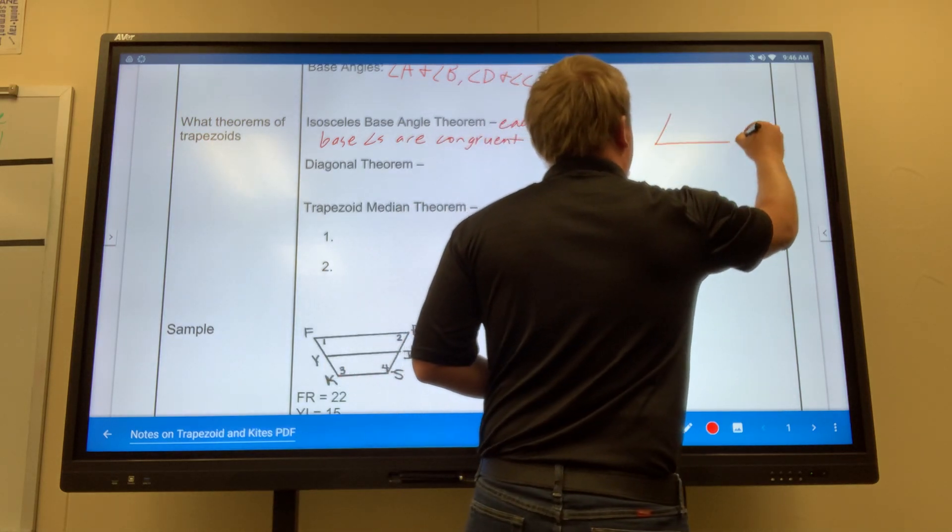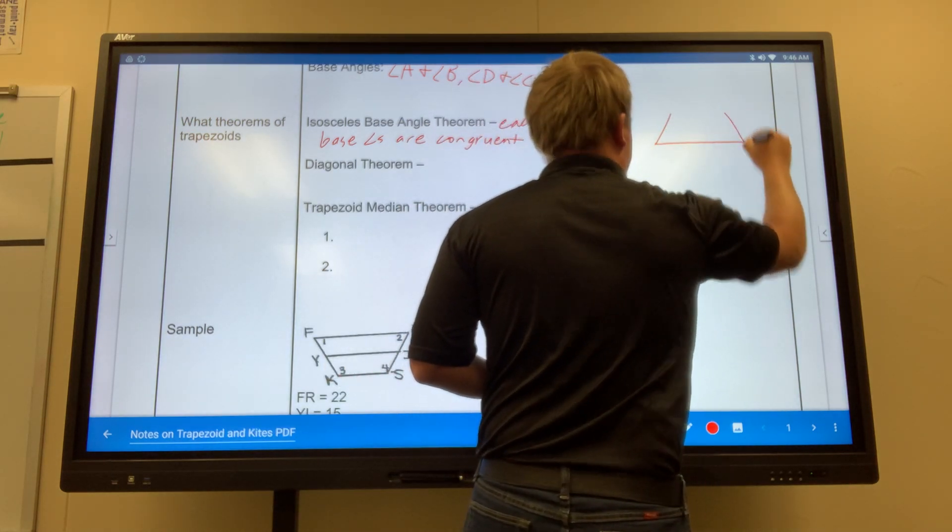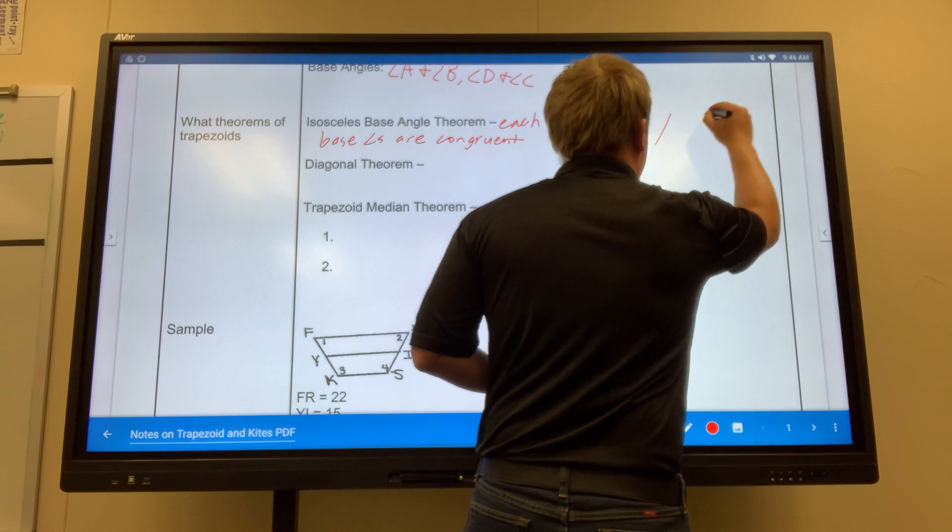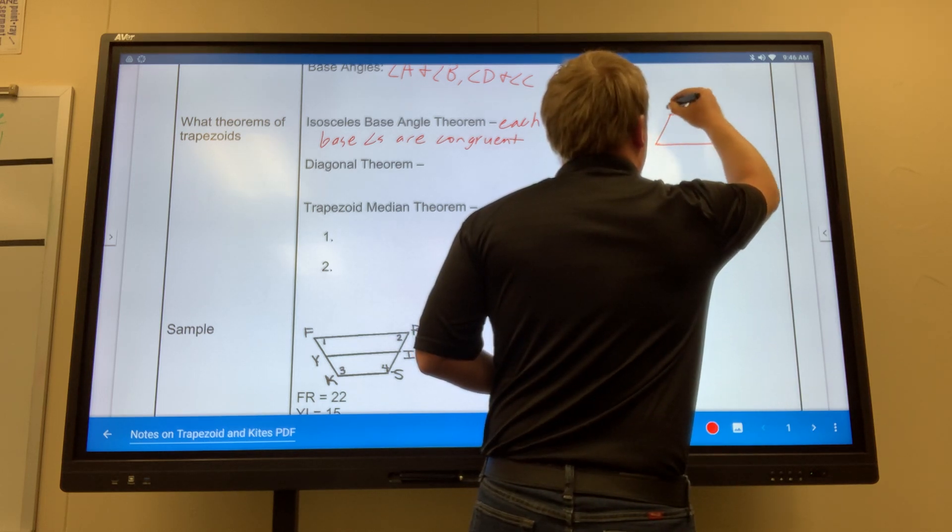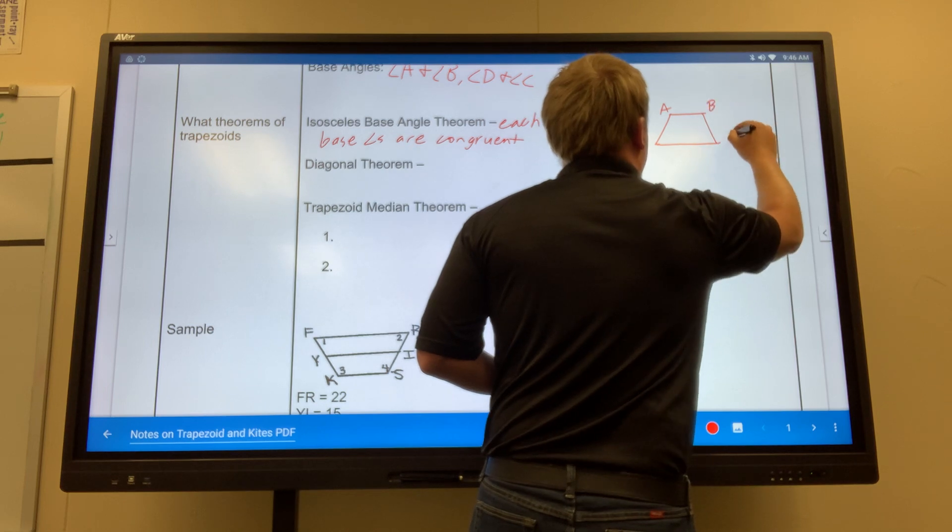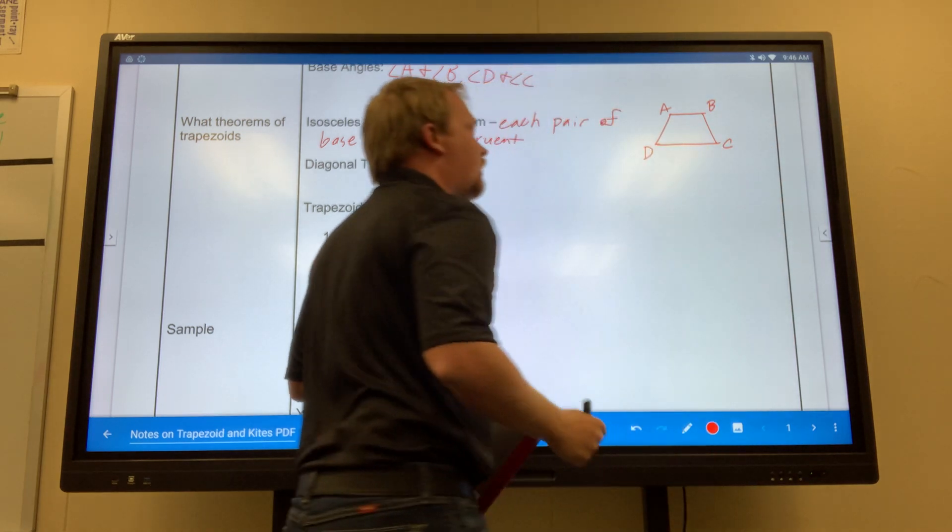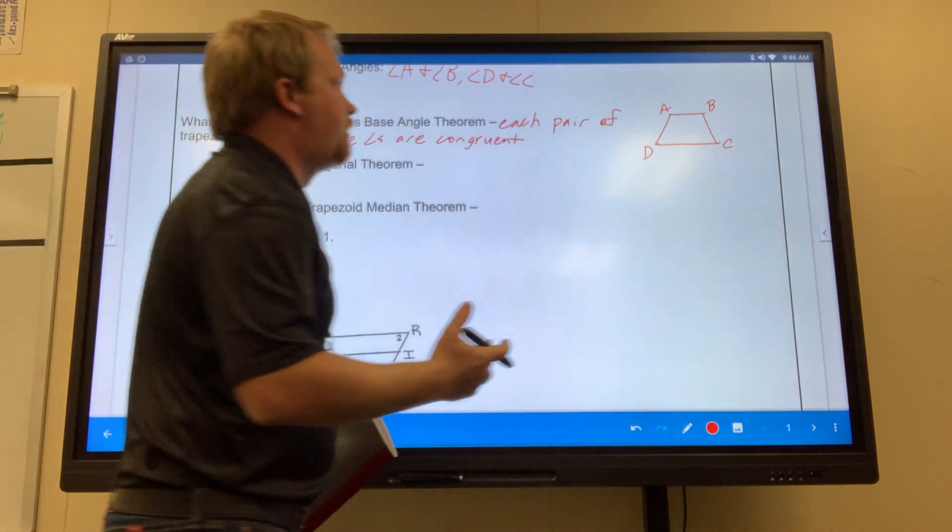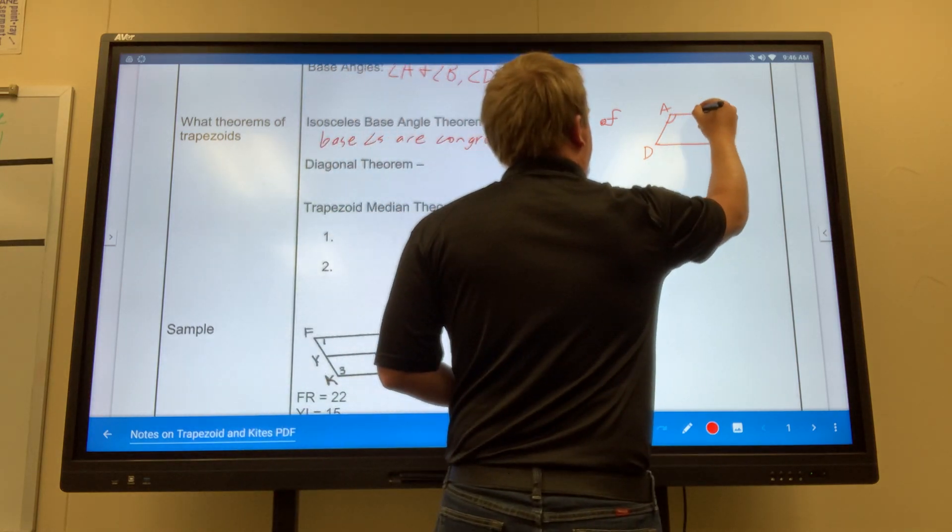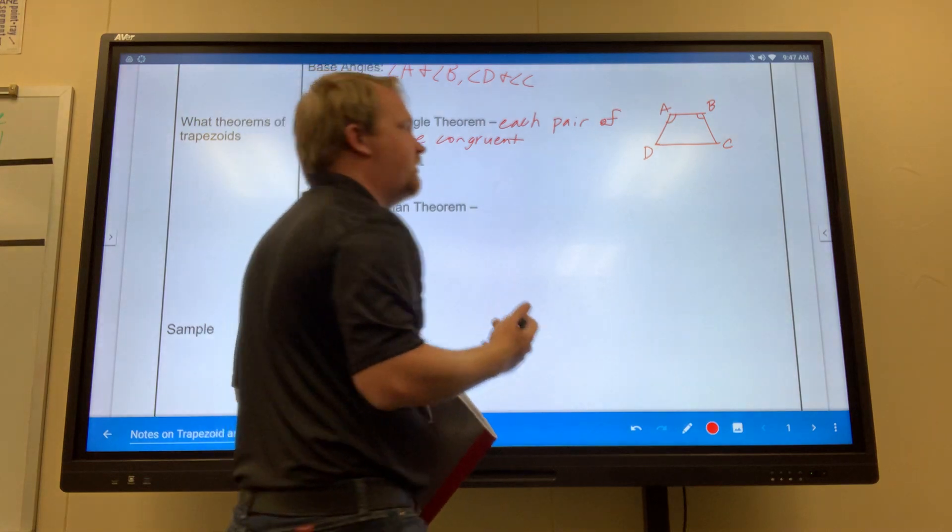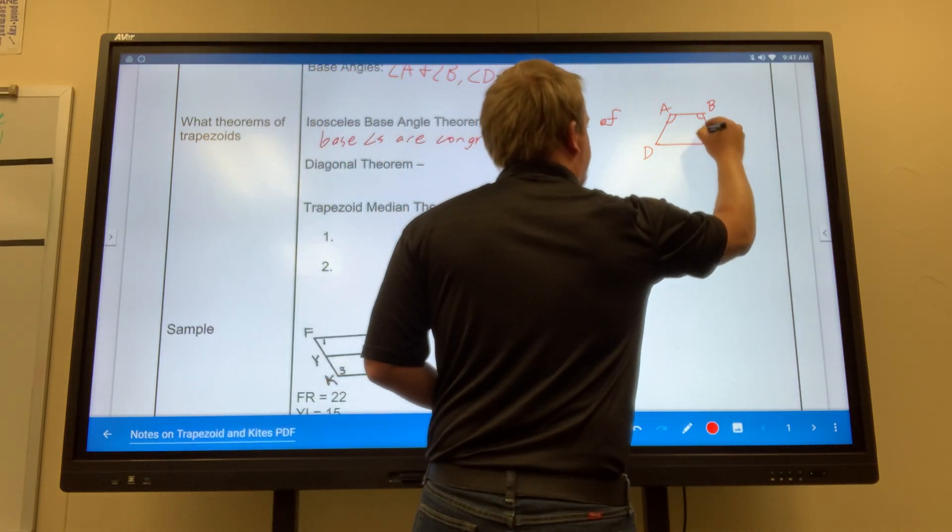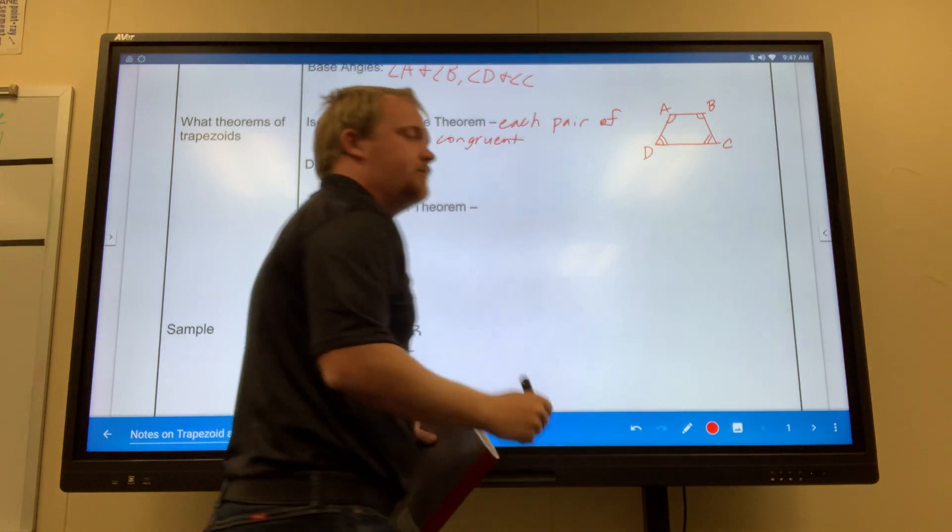So if I look at this, let me draw that. So A, B, C, D. Well, remember, this is one pair, A and B. That's one pair, so that's going to be congruent. And the second pair is C and D. Those are going to be congruent as well.